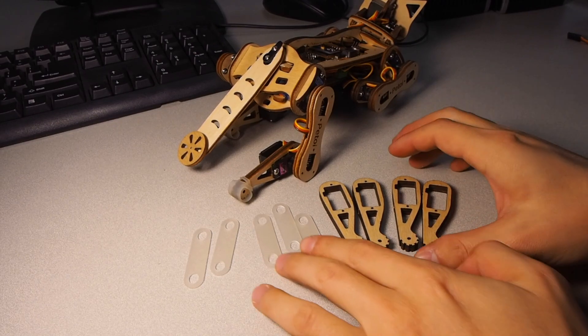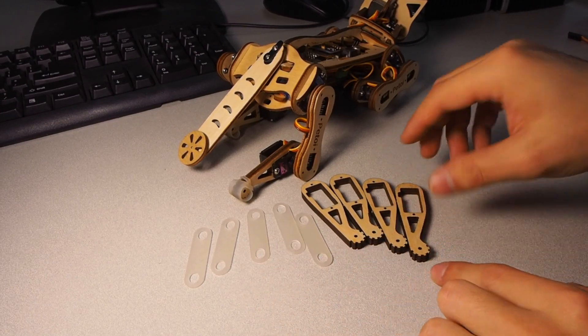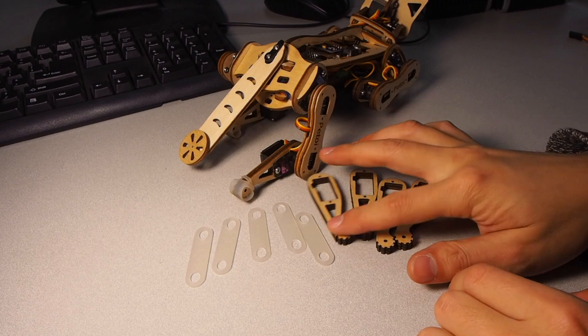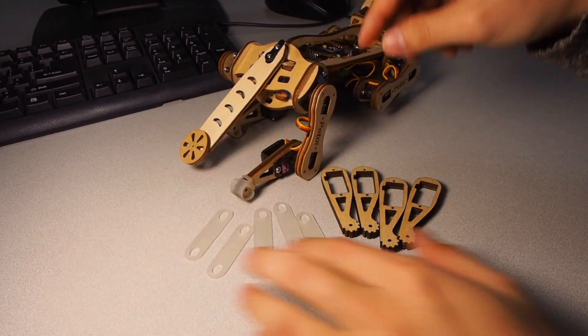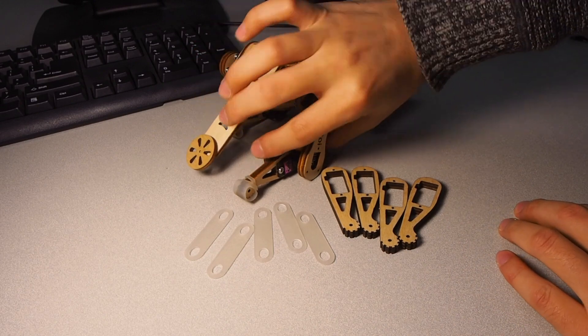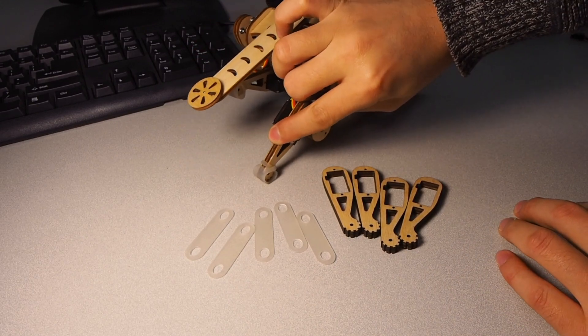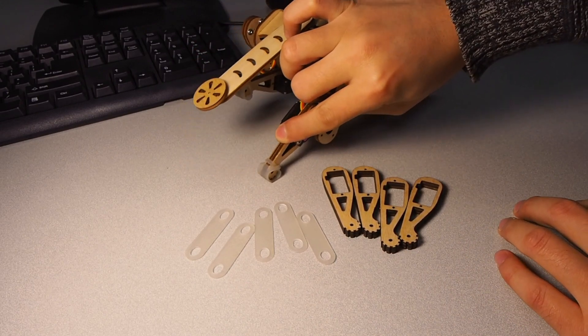Now let's prepare the toe of the legs. These are rubbers to increase the friction between the wooden foot and the ground.